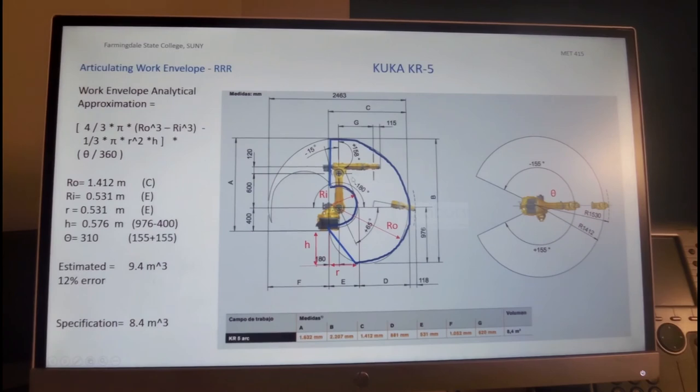Now, with that information, we can calculate the outer sphere, which is 4 third times pi times Ro cubed minus Ri cubed. And then we have to subtract the height of the cone, which is 1 third pi, R squared times H.